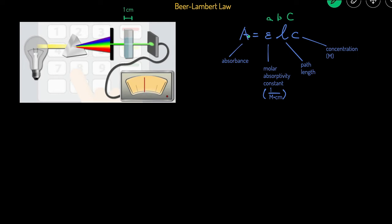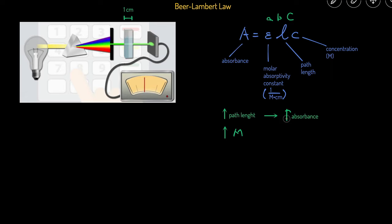From this equation we can see a couple of relationships. As path length increases, absorbance increases. As concentration (molarity) increases, absorbance also increases — because if the vial is longer, light travels through it longer and can be absorbed more, and if the solution is more concentrated, there are more particles to absorb the light. So path length and molarity are both directly proportional to absorbance.